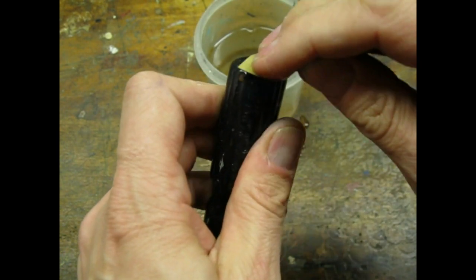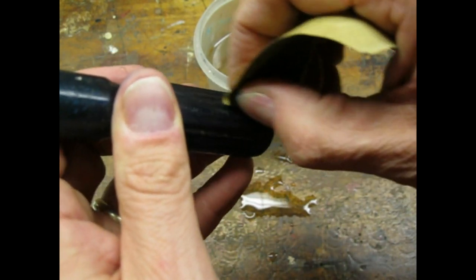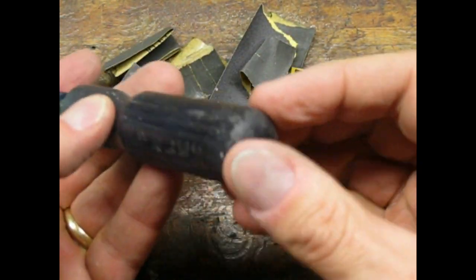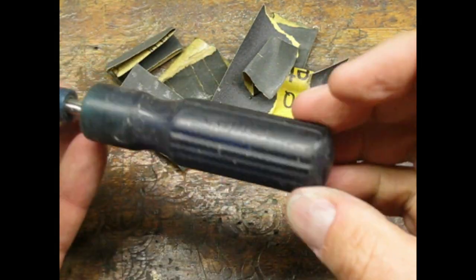I started with 320 paper on this handle and worked my way down to 1000. This handle had a lot more wear and scratches. I wasn't sure how much I could improve its appearance.